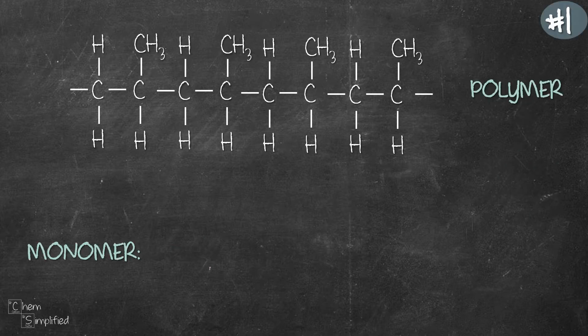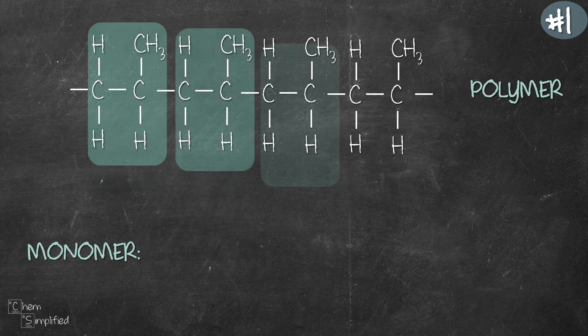Let's find the structure of monomer from this polymer. Look closely at the structure. Do you see a pattern that keeps repeating? That's called a repeating unit. Here's what I see. Four repeating units.